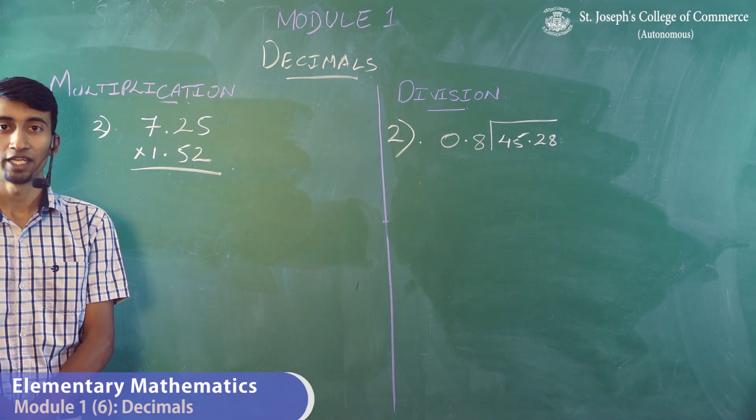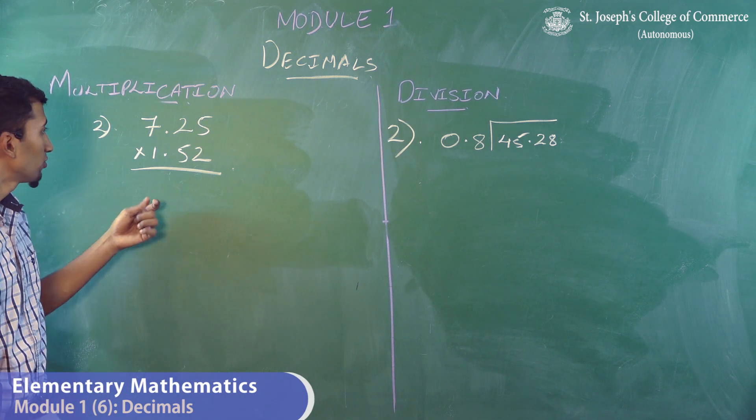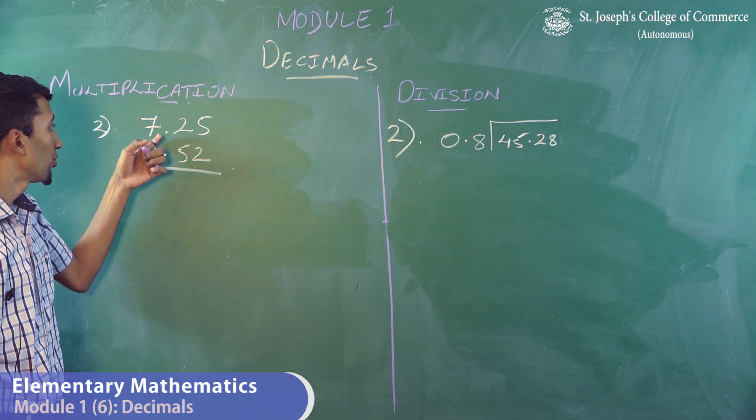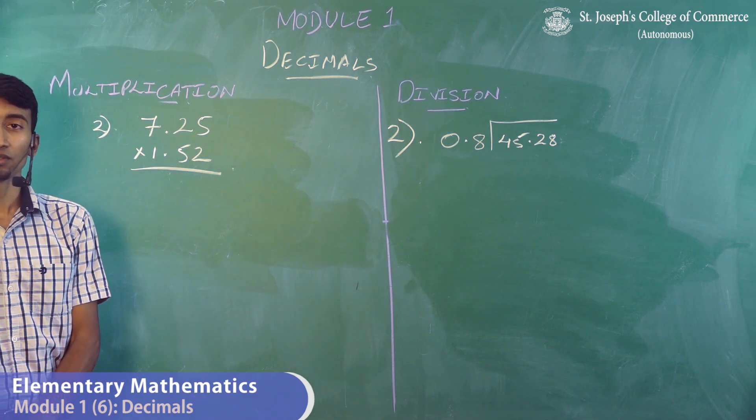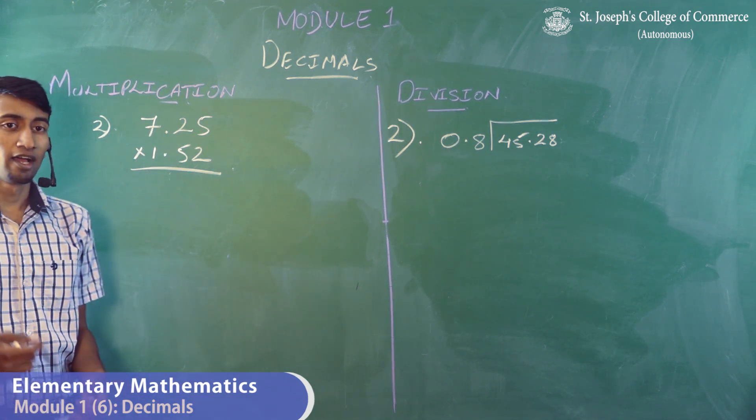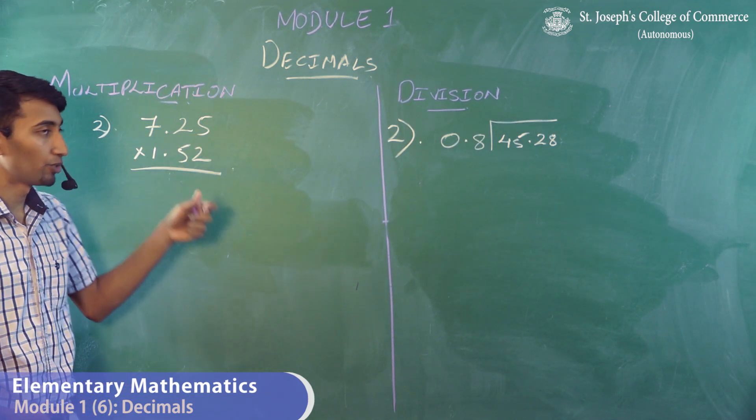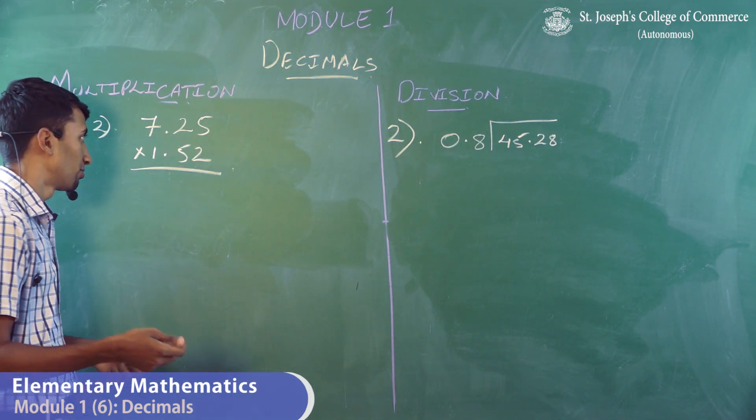Now we move into multiplication and division under decimals, where we are going to solve the second sum under each type. Over here, it says 7.25 into 1.52. We are going to solve this sum as if the decimal point itself is not there. 725 into 1.52, like a normal multiplication.